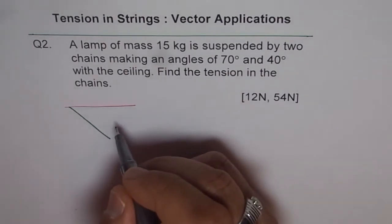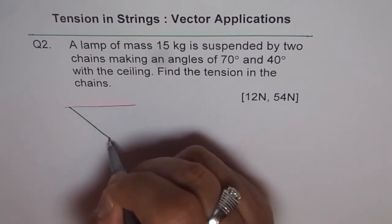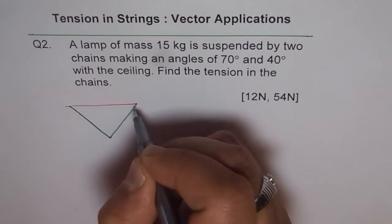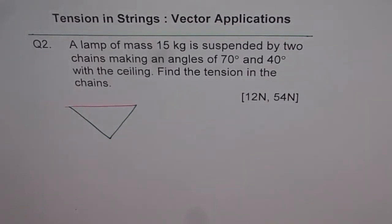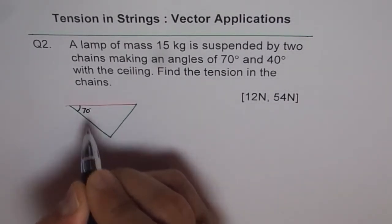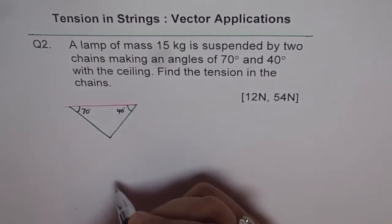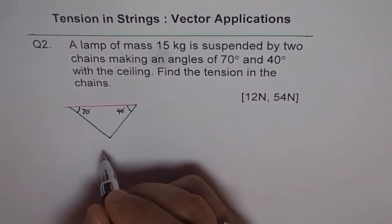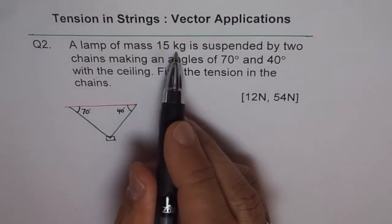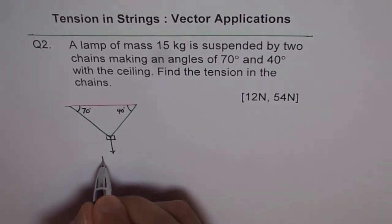On the other side, let us make an angle of 40 degrees. So now the angles are not very accurate, but let's say this is 70 degrees and this one is 40 degrees. And the mass attached here is 15 kg.